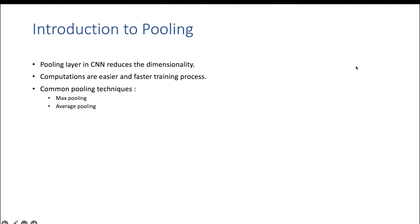Hello everyone. In this video we are clearly going to understand what the pooling layer within a convolutional neural network model is and how the pooling layer is going to help us reduce the number of dimensions within the feature maps. The feature maps are the outputs generated from your convolutional layers. For those who are not aware of what feature maps and convolutional layers are, please revisit my previous videos.